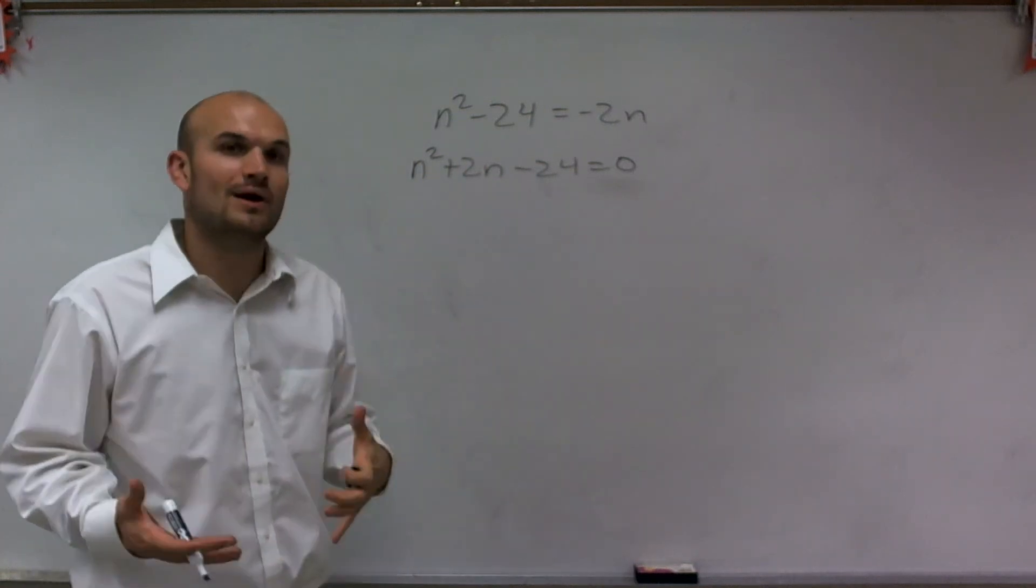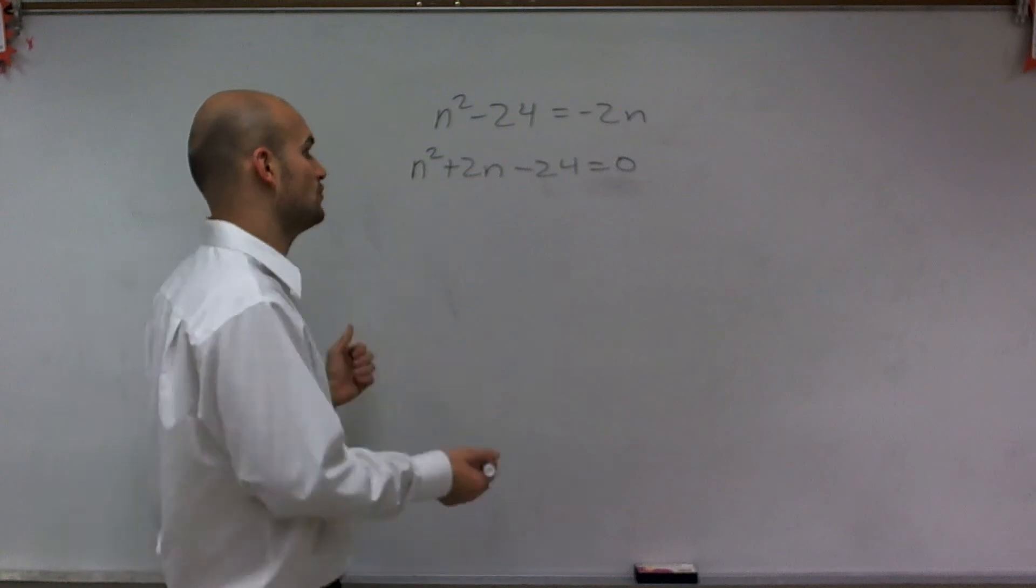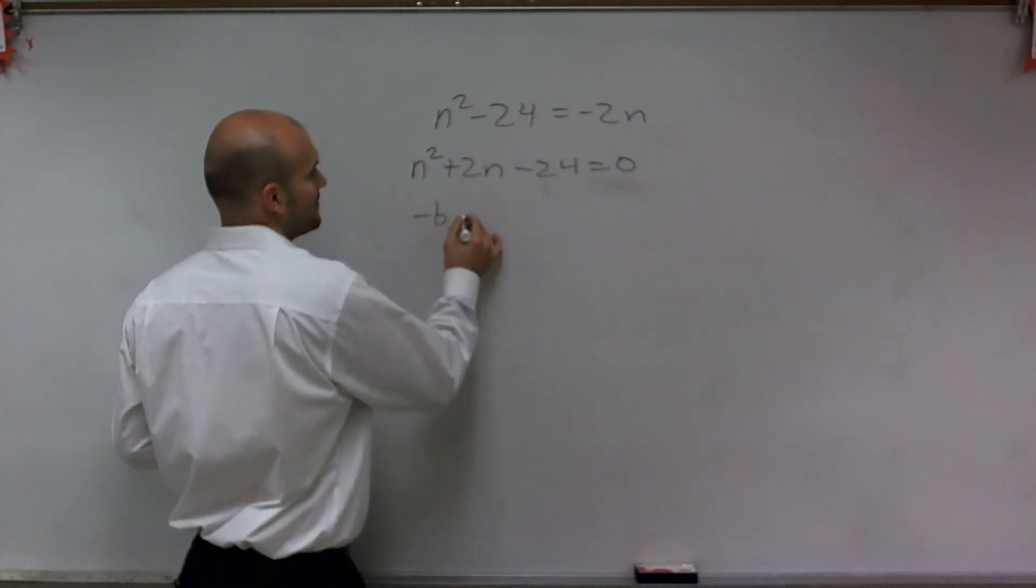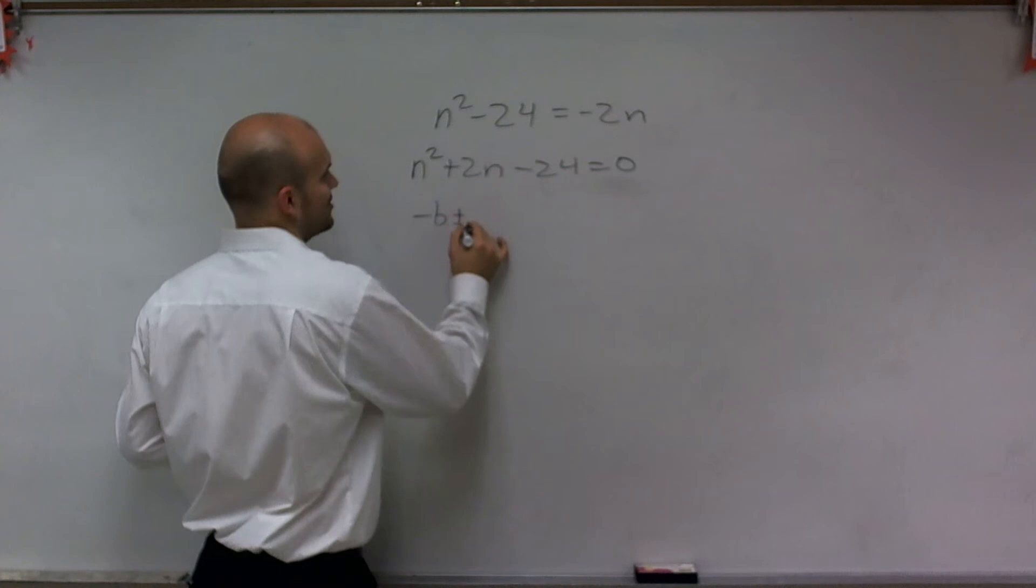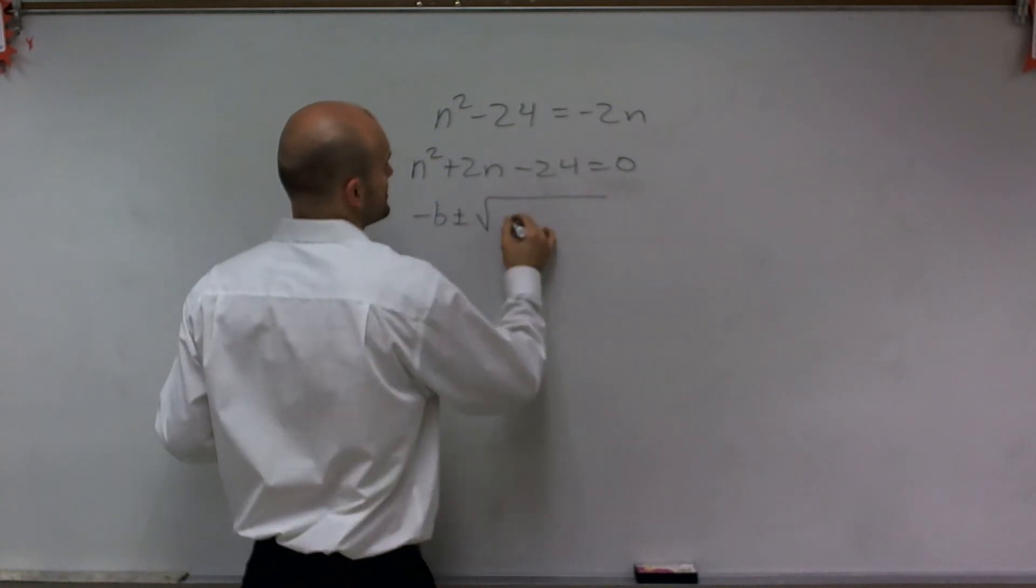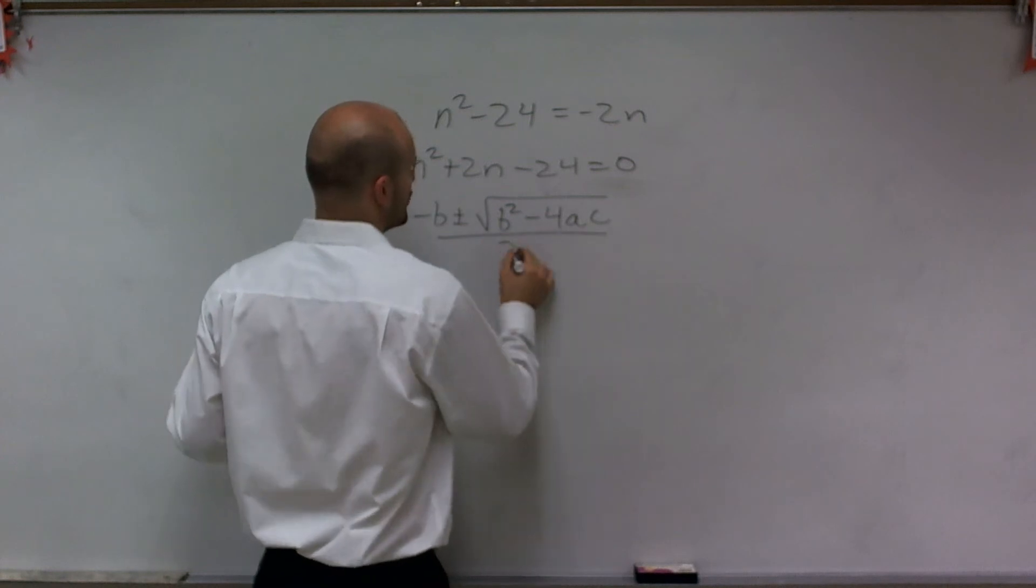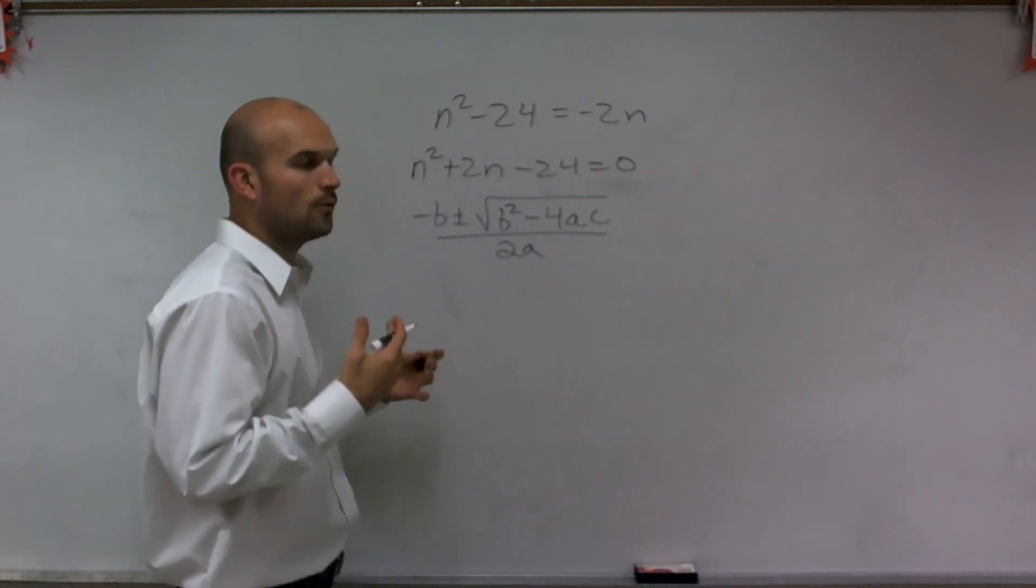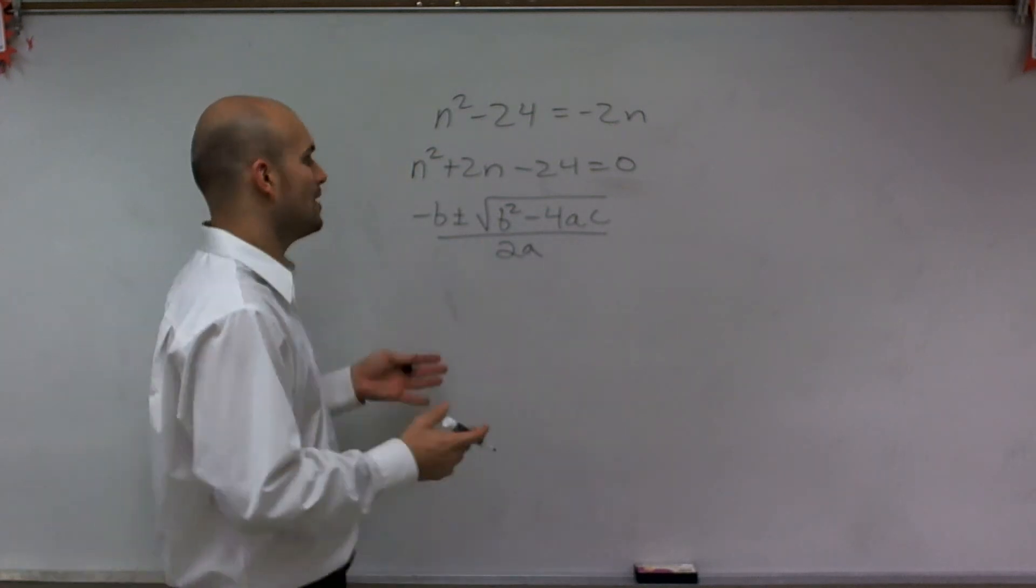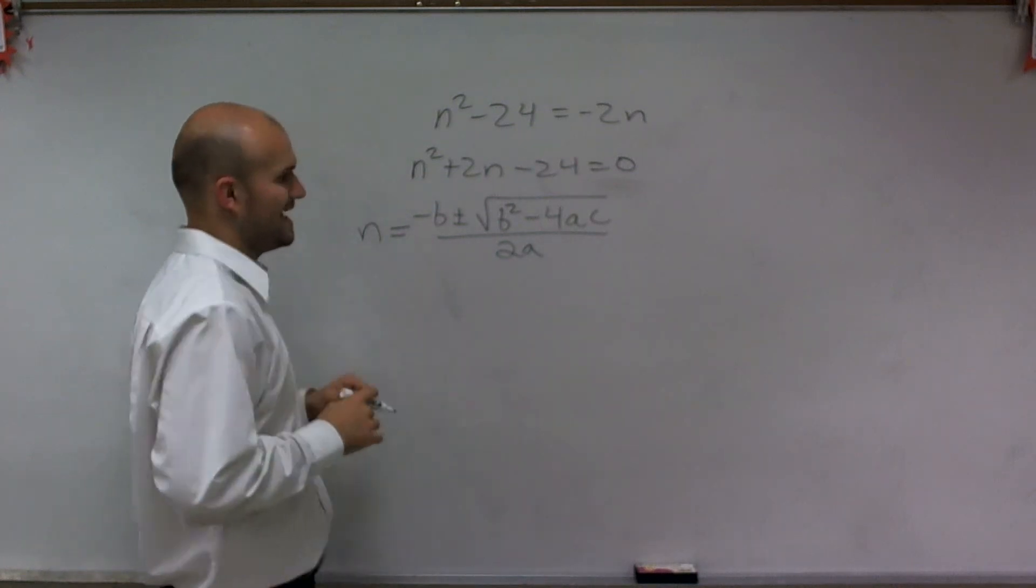When I have a problem in quadratic form, the next thing I can do is write out the quadratic formula, which is -b ± √(b² - 4ac) / 2a. What does the quadratic formula equal? The quadratic formula equals our values for n.